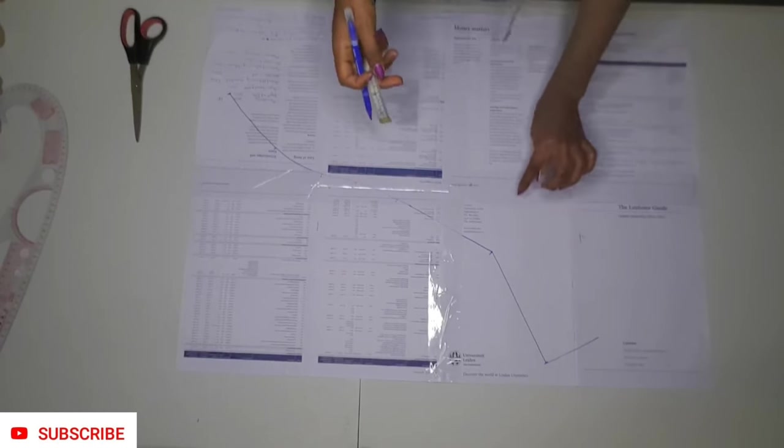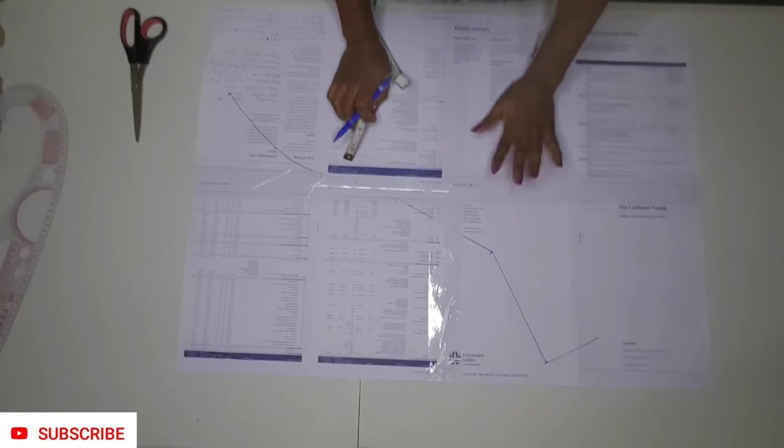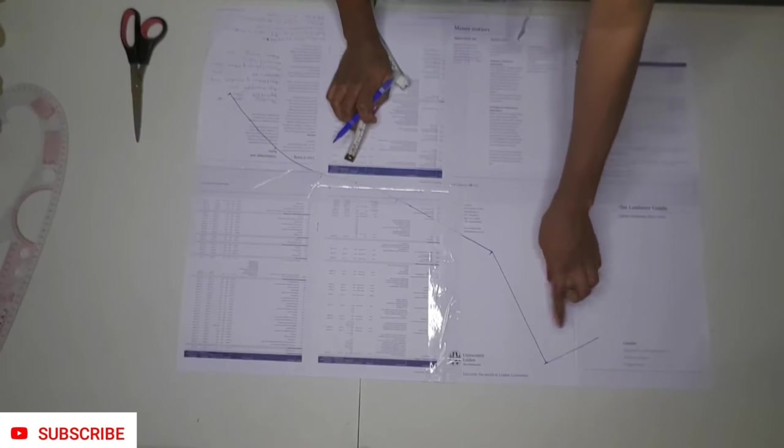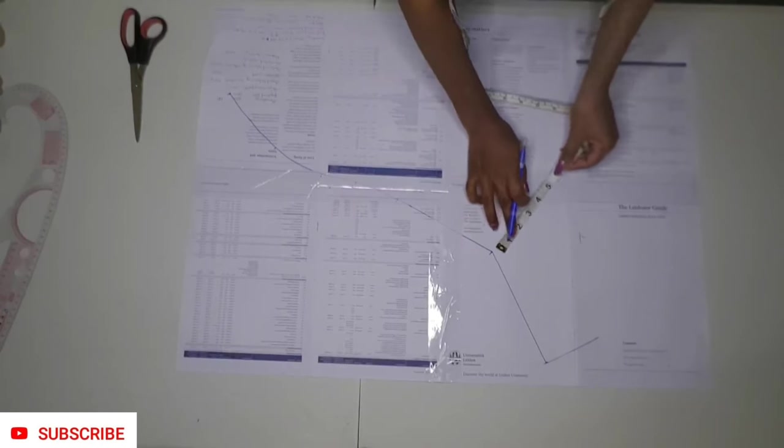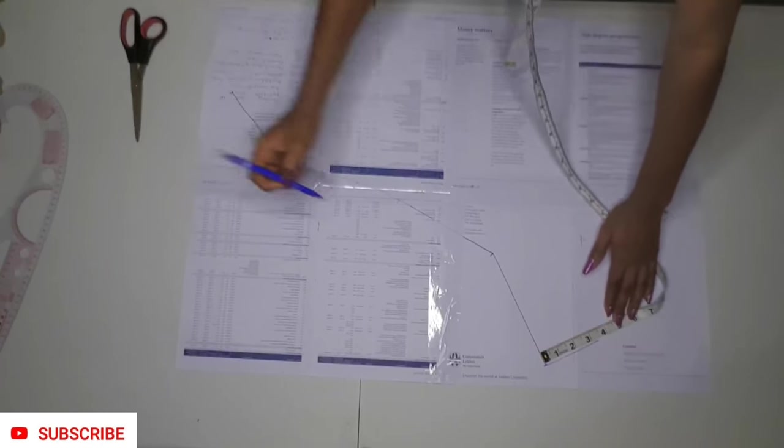You see that I traced out along the neckline only, down to the curve I made. Now it's time to determine how wide you want your cape to be and how you want the shape to look like as well. This totally depends on you, so you can feel free to design it however you want.